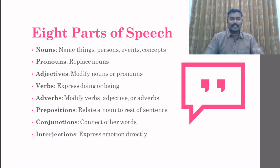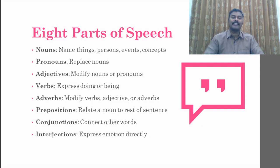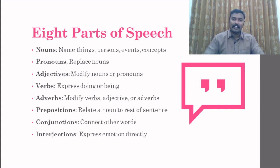To give a brief definition of these 8 parts of speech: noun is a naming word — it names things, persons, events, concepts, and places. Pronoun is a word which comes instead of a noun; it replaces the noun and stands for a noun. Adjectives are words which modify nouns or pronouns, or we can also say that adjectives give some additional information about nouns and pronouns.